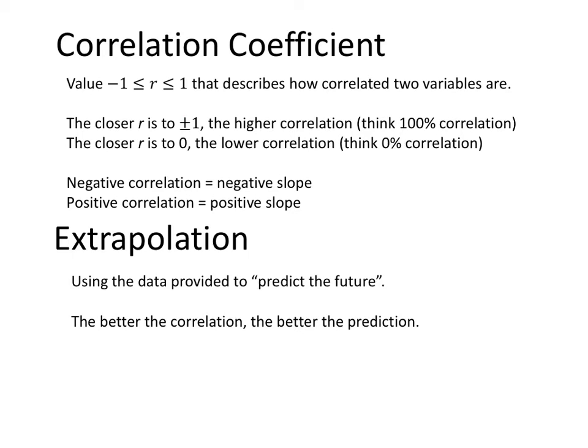The closer it is to 0, the lower the correlation - think like 0% correlation. If you get a 0.2, that would be like a 20% correlation. Not very good.